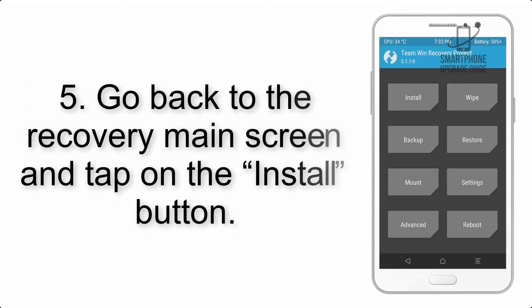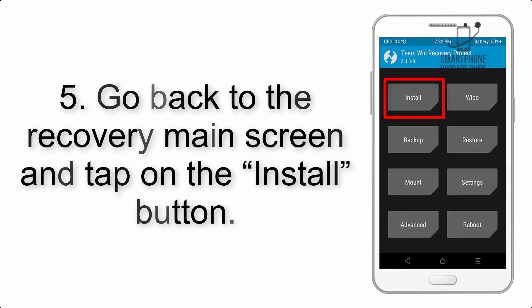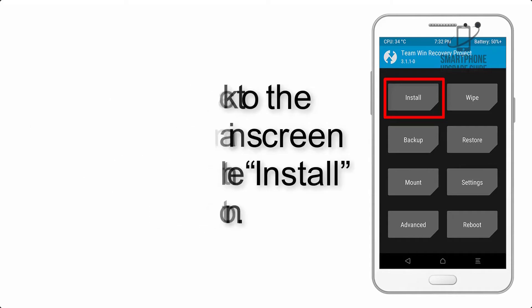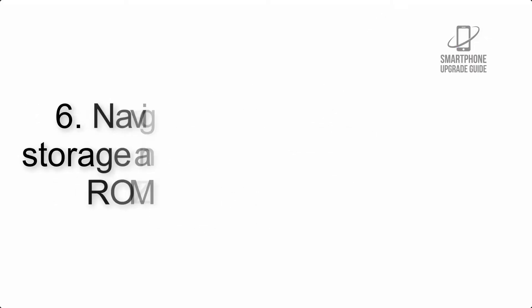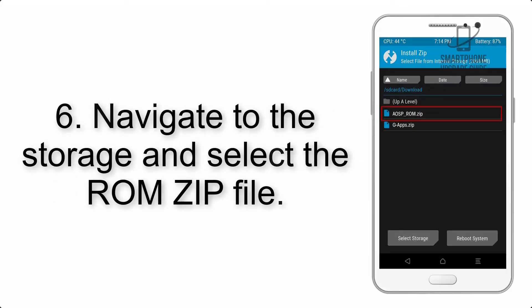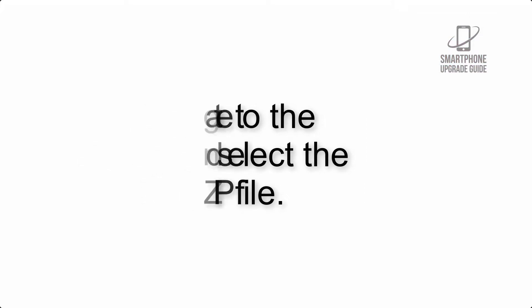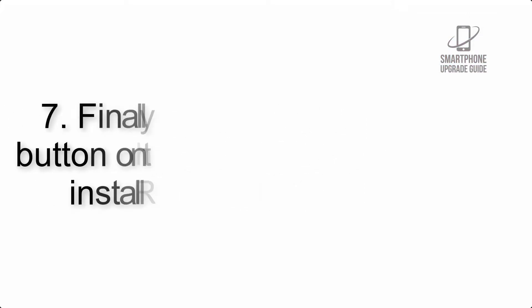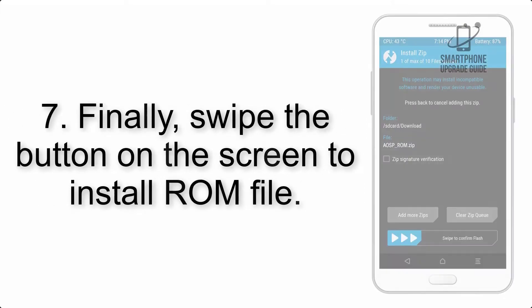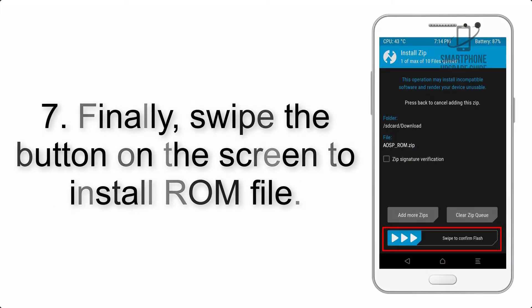Step 4: Swipe the button to wipe the device. Step 5: Go back to the recovery main screen and tap on the Install button. Step 6: Navigate to the storage and select the ROM zip file.